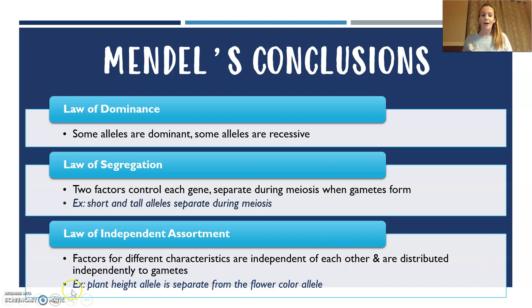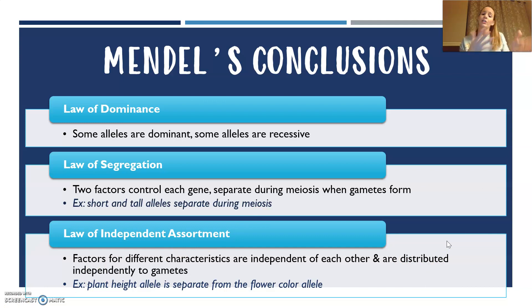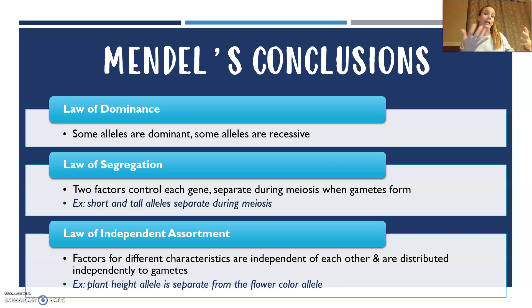Next was the law of segregation: when two factors control each gene, they simply separate during meiosis when those gametes are formed. An example of this would be short versus tall alleles. The law of independent assortment is when factors for different characteristics are independent of each other and are distributed independently to gametes.